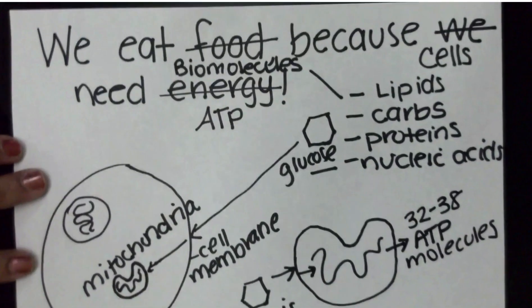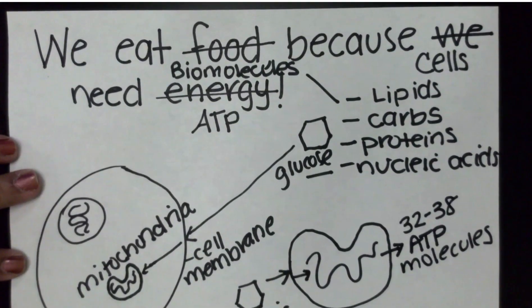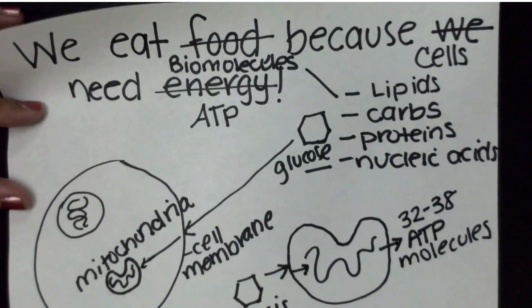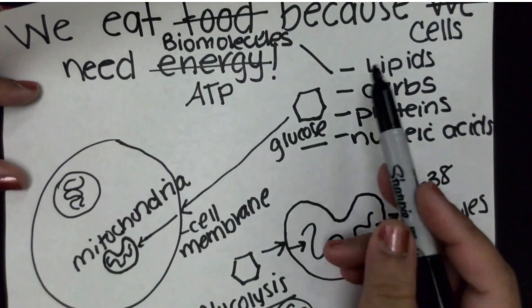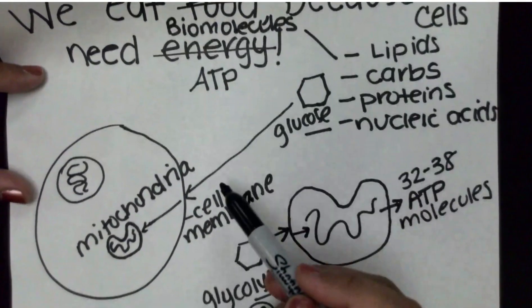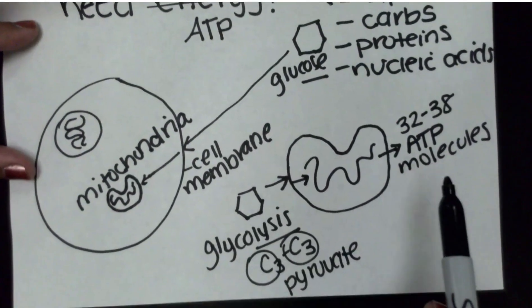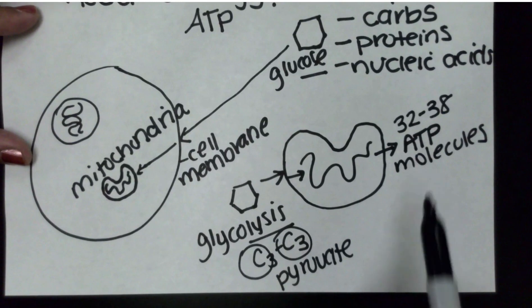So again, just to summarize: we eat biomolecules because our cells need energy. An example of a biomolecule is a carb or glucose. It will need to go in through the cell membrane so it could reach the mitochondria in order for us to make ATP or energy for our body to use.